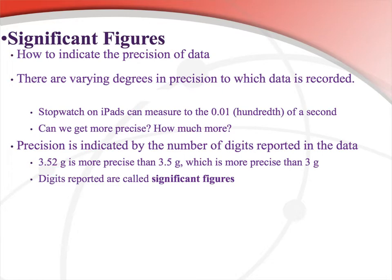The more numbers you write down, the more you're sure of the data. So if you write down too many numbers on a chemistry problem — things we're not sure of — it'll be marked incorrect or you'll lose points for not writing down the correct number of digits. We're going to be trying to round things with the correct number of significant figures.